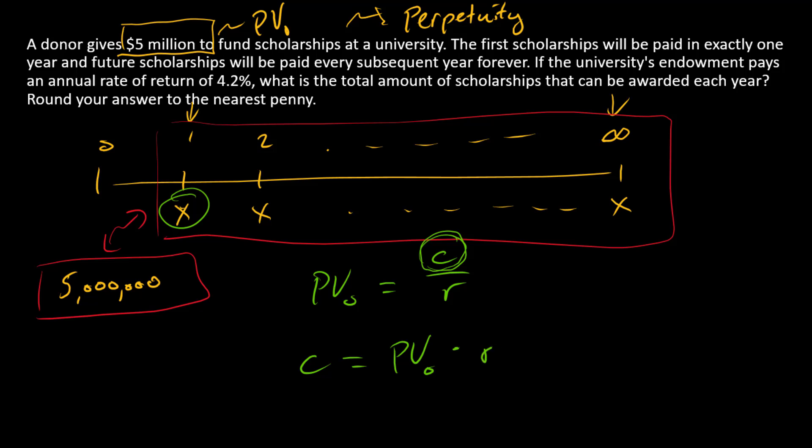Let's insert the numbers: five million and multiply that by 0.042, and the answer is two hundred ten thousand dollars per year. And so that two hundred ten thousand dollars, that's our X that we are looking for.